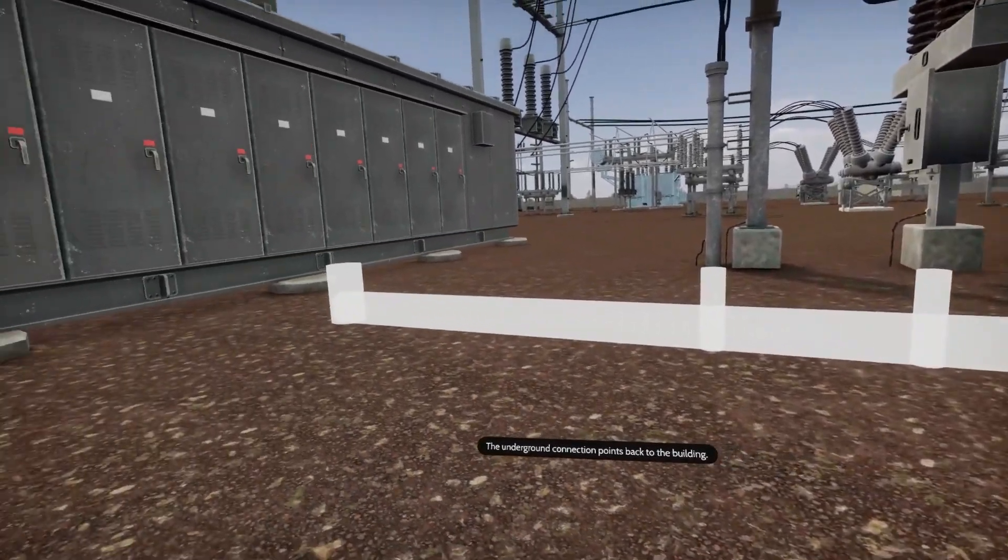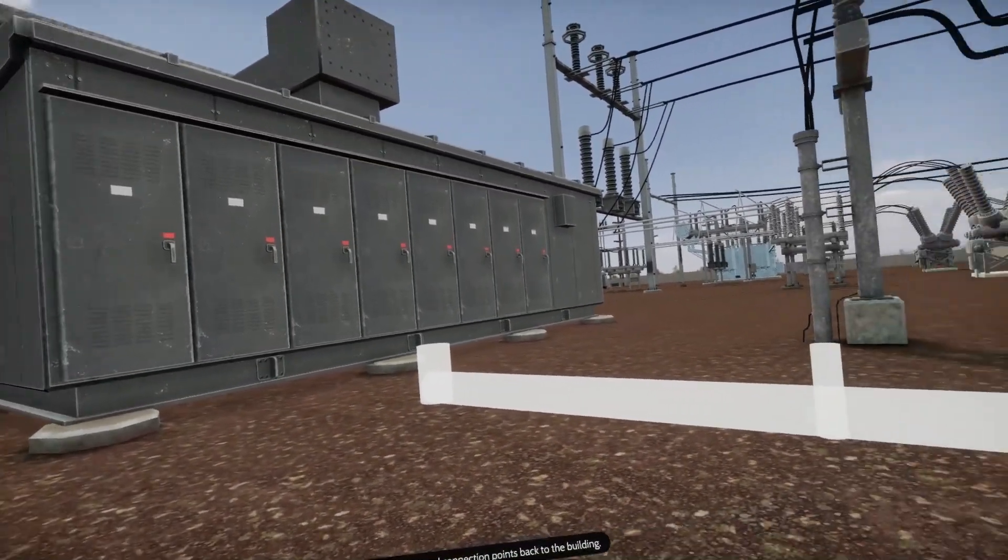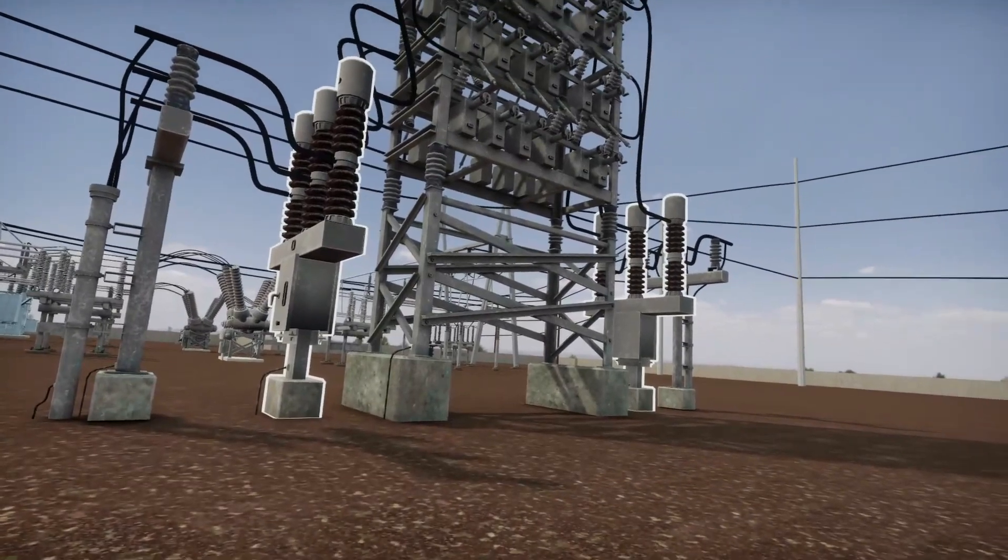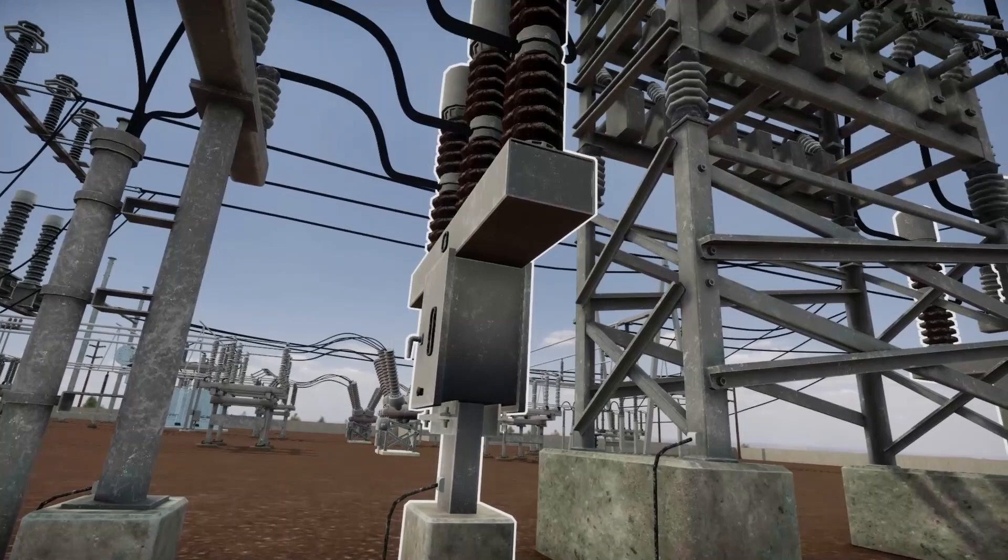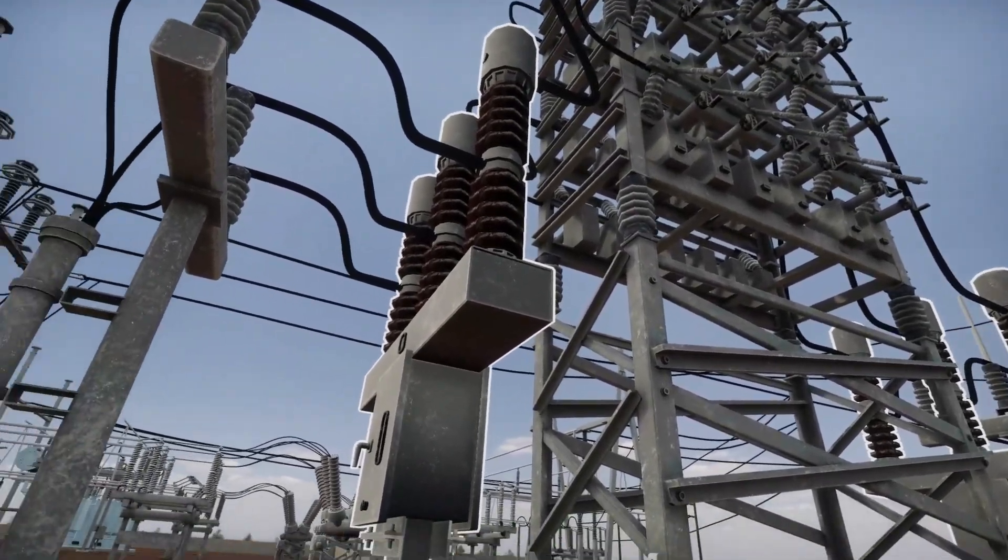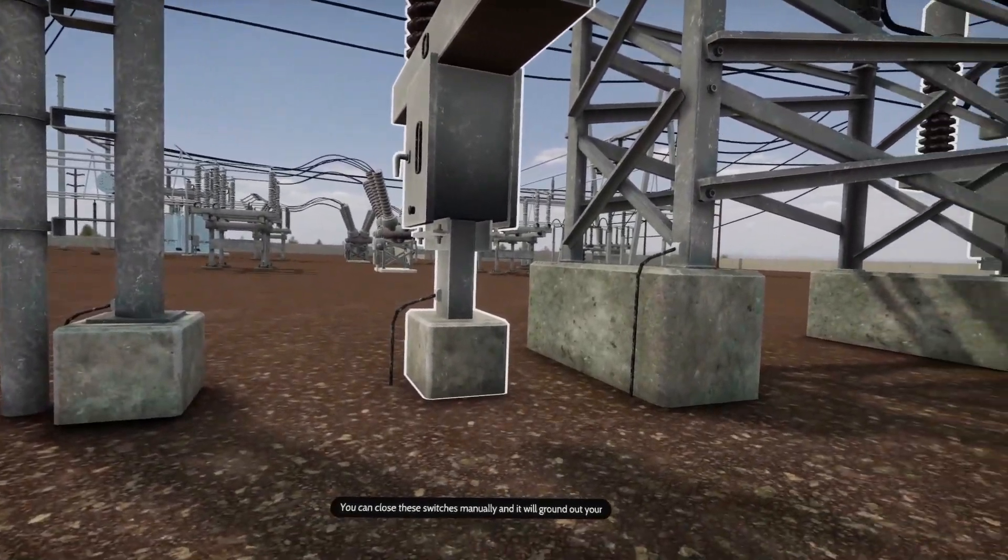The underground connection points back to the building. These switches are if you have to work on this capacitor bank system. You can close these switches manually and it will ground out your capacitor banks and the frame.